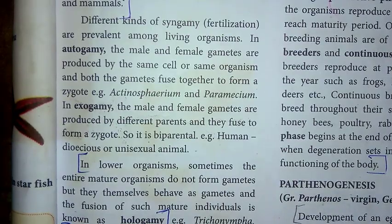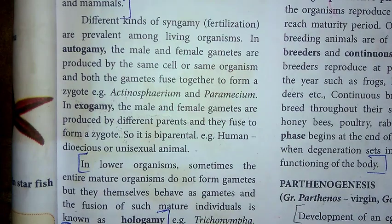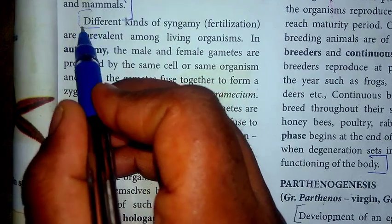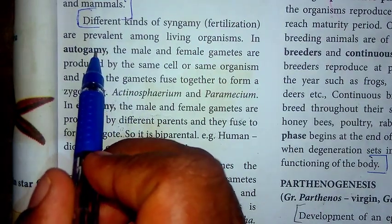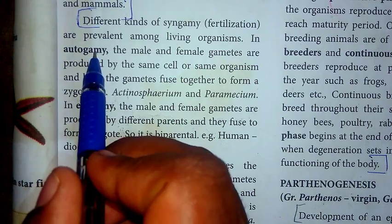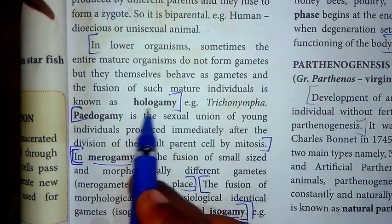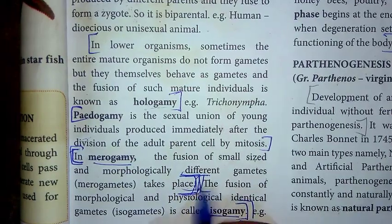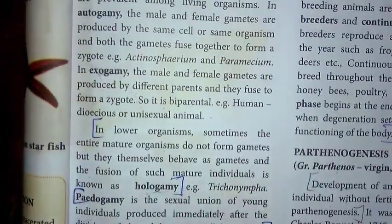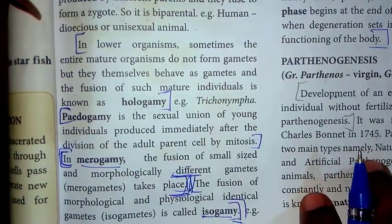We are now moving to Part D — write in detail. For the first question: list out the different kinds of syngamy or fertilization among living organisms and explain any five. The answer starts in page number seven under 'different kinds of syngamy,' and you write five types — one, two, three, four, five — up to and including meirogamy.